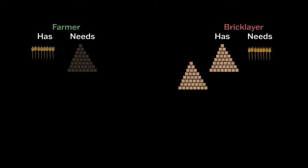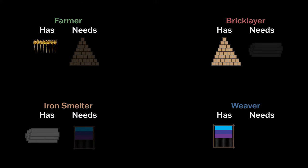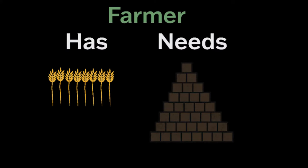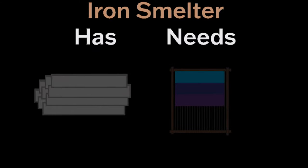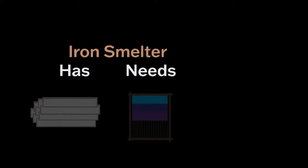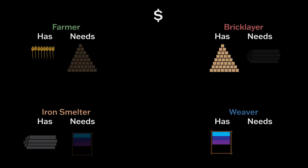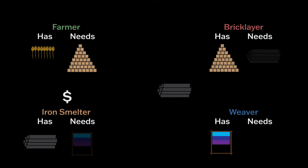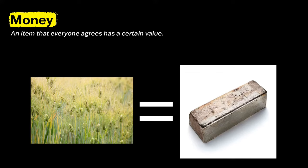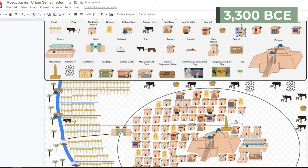Remember the farmers and specialized workers traded items for what they needed? As more and more people specialized, there were problems with this system. What if the farmer wants bricks, but the bricklayer wants iron, and the iron smelter wants cloth? To solve this, Sumerians invented the concept of money. Instead of doing a confusing multi-way trade, the farmer can give money to the bricklayer who can give money to the iron smelter and so on. Money is an item that everyone accepts has a certain value. In the case of Mesopotamia, that item could be barley or silver — a certain weight of silver was worth a certain amount of barley and either could be used for taxes or purchases. Add one mine and one metalsmith.